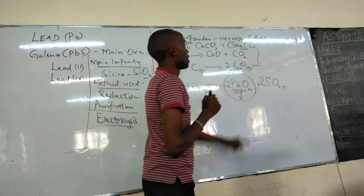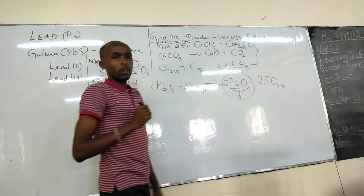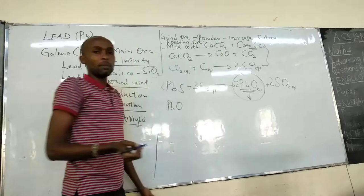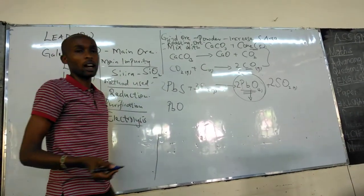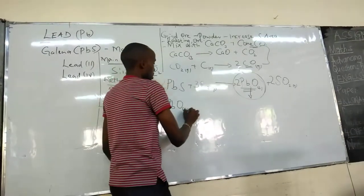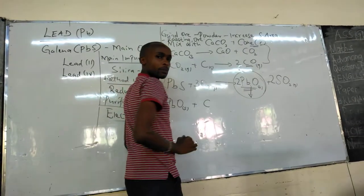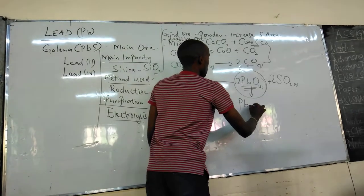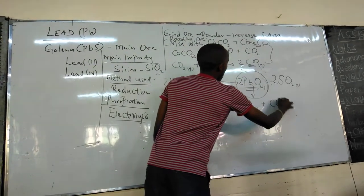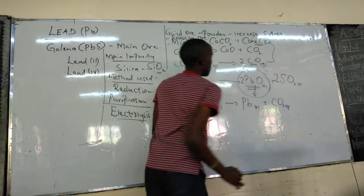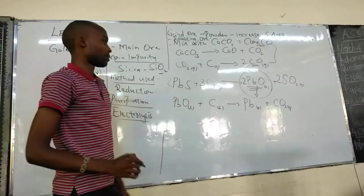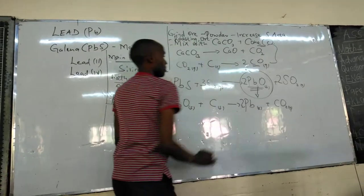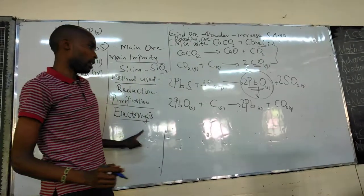Now, with lead(II) oxide, the next thing that happens is reduction. If it is reduced by carbon, we get lead and carbon(IV) oxide. The equation is balanced in that form.